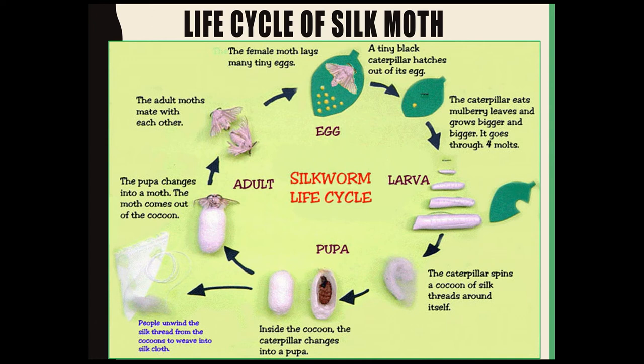After four to six weeks, when the larva has achieved its maximum growth, it stops eating and enters the next stage called the pupa stage. When it enters the pupa stage, it first weaves a net to hold itself, then starts swinging its head from side to side in the form of the figure of eight. During these movements, the caterpillar secretes a fiber from special glands present in the silkworm's head. These fibers are made up of protein — the fibroin protein.